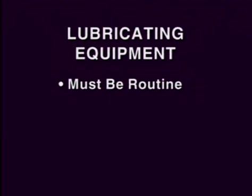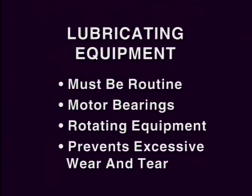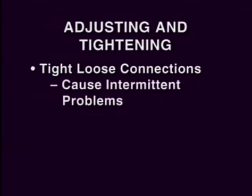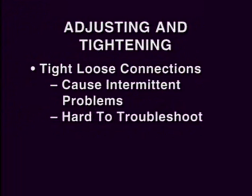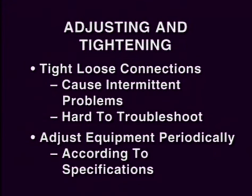Lubricating equipment undoubtedly represents an important part of a routine preventive maintenance program. The lubrication of motor bearings and other rotating equipment will help eliminate excessive wear and tear, as well as heat in motors. Because we have tremendous vibration in a plant environment, tightening of loose connections is a must. Loose connections can cause tremendous intermittent problems which are extremely hard to troubleshoot. All equipment must also be adjusted periodically, and these adjustments have to be in line with the equipment manufacturer's specifications.